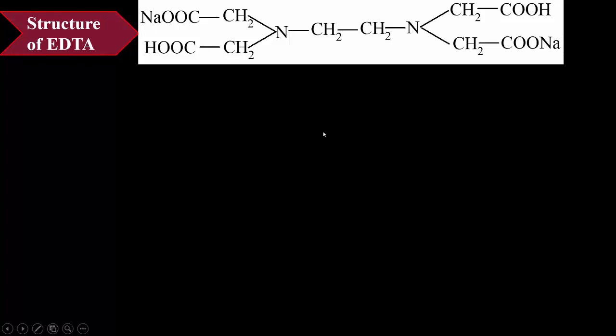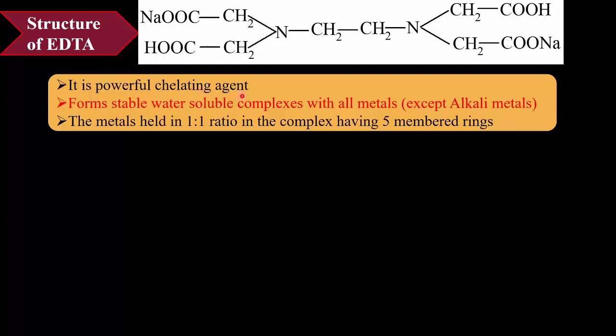Now we learn the structure of EDTA. We know that the long form of EDTA is ethylene diamine tetraacetic acid. This is the structure. In this structure, these two CH2 groups represent the ethylene, these two nitrogen atoms represent the diamine, and these four groups represent the tetraacetic acid. From these four, two acetic acid groups — the two hydrogen ions are replaced by two sodium ions. This EDTA is a powerful chelating agent and it forms stable water-soluble complexes with all the metals except alkali metals, that is the first group from the periodic table. The metals are held in a 1-to-1 ratio in the complex, having five-membered rings.